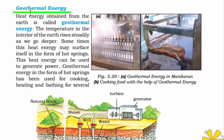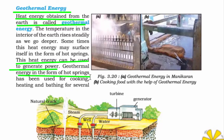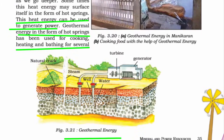Geothermal energy is heat energy obtained from the earth. As you go deeper inside the earth, the heat increases because of the molten magma in the core. This heat energy can be used to generate power. Geothermal energy also forms hot springs — hot steam coming out of the land — used for cooking and bathing. You drill a bore inside the earth's surface, extract the heat through a pipe, mix it with water to produce steam, and that steam rotates a turbine to produce electricity.